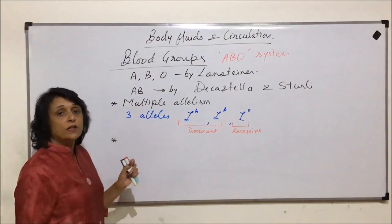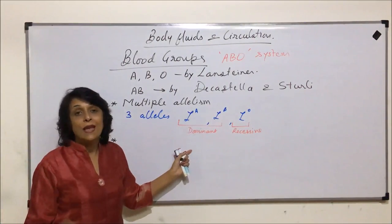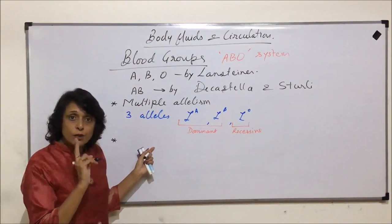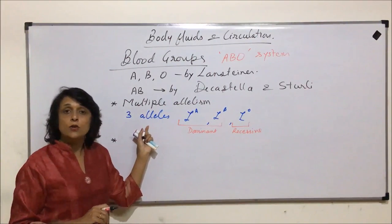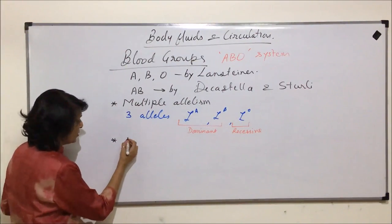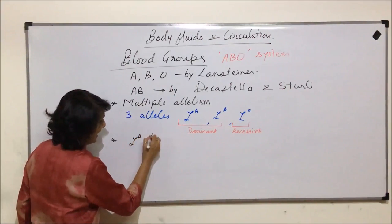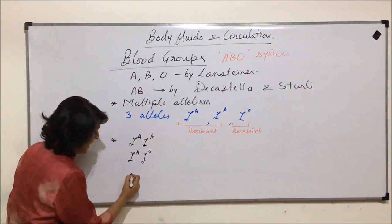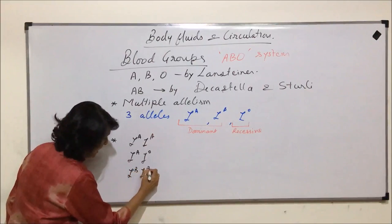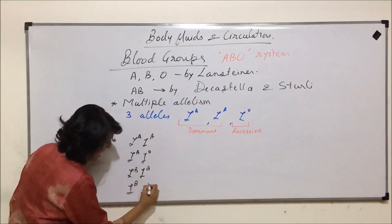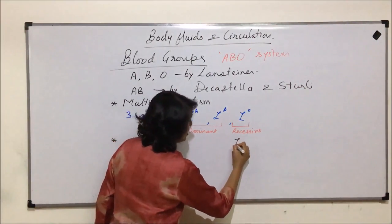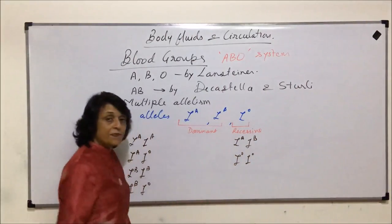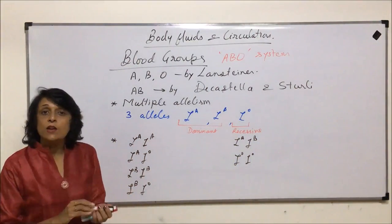Let us see what are the possible combinations an individual can have out of these three alleles. Every individual would have only two alleles, but there are three alleles controlling blood group. The combinations are: IA IA (homozygous), IA IO (heterozygous), IB IB (homozygous), IB IO (heterozygous), IA IB, and IO IO.